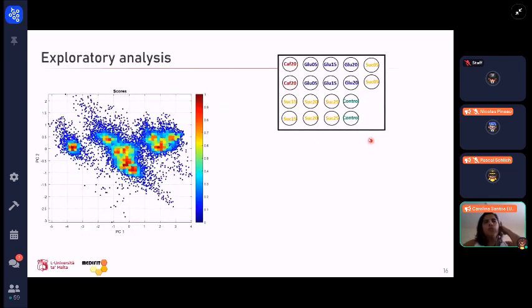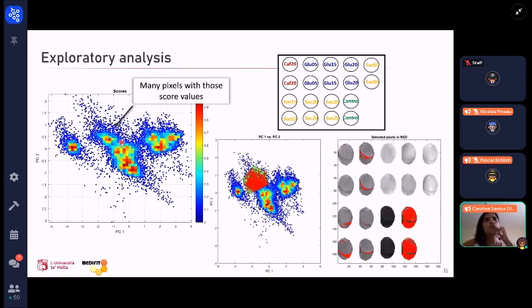Here are our samples. The labels indicate the type of adulterant and concentration of each one. Here we can see this density scatter plot. The red spots show where there are many pixels with those specific score values, because we're talking about pixels of an image. This particular cluster is related to the control sample. The other clusters are related to the other samples around.